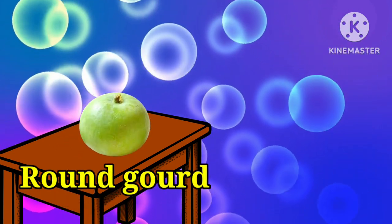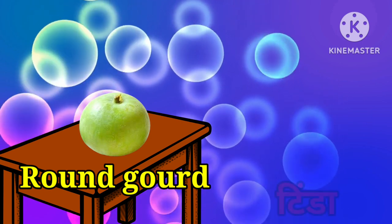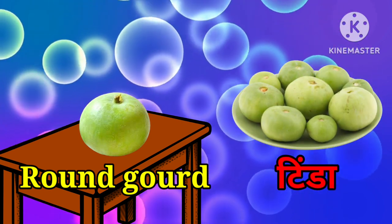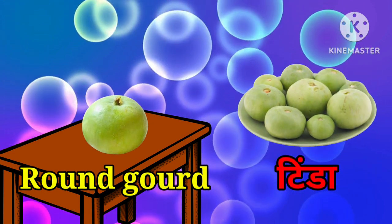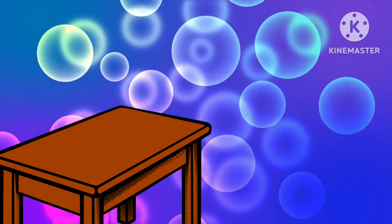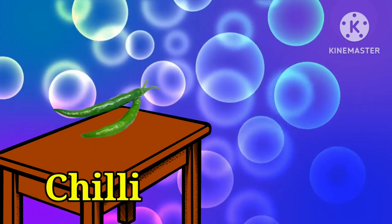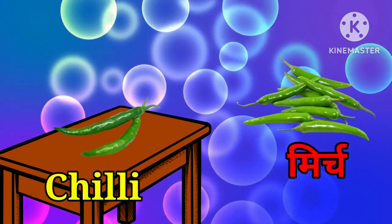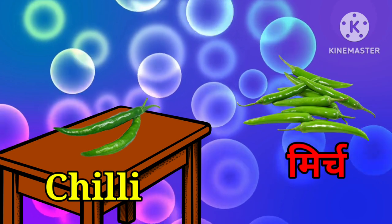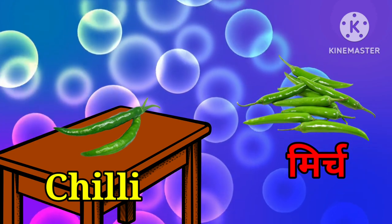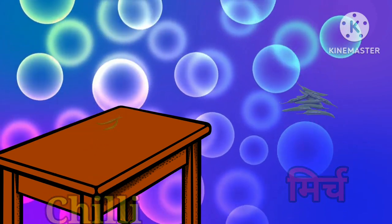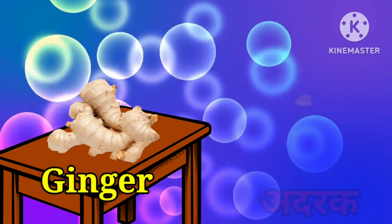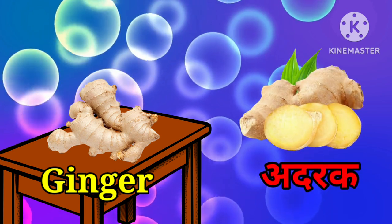Round gourd means tinda. Once more, it's round gourd. Chili means mirch. Once more, it's chili.